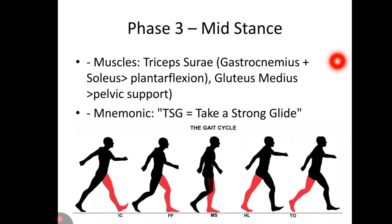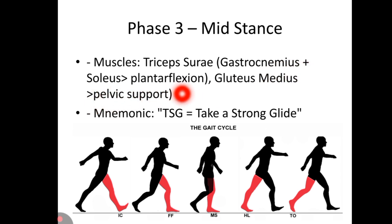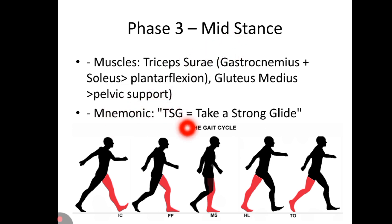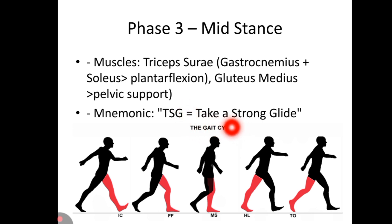Phase 3 is mid stance. Muscles involved are triceps surae — gastrocnemius and soleus — for plantar flexion, and gluteus medius for pelvic support. The mnemonic to remember is 'Take Strong Glide': T of Take for triceps surae, S for soleus, and G of Glide for gluteus medius.